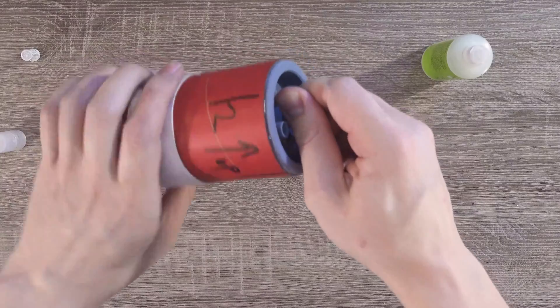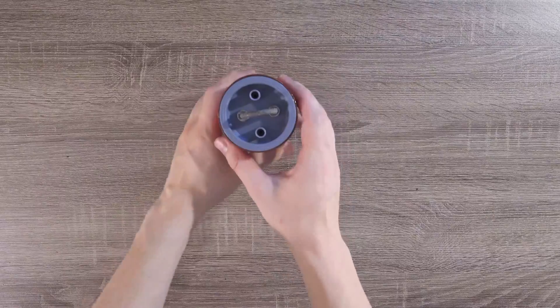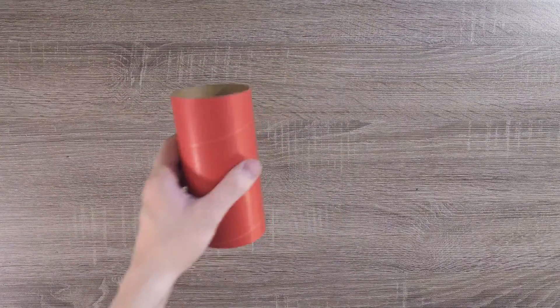I used a pretty generous amount of medium CA superglue to do this. Once that's done, we'll set this coupler aside to let it dry, and we'll start work on the piston.